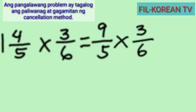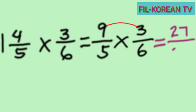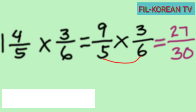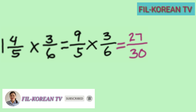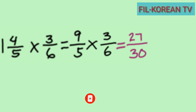The next step is to multiply the numerators and also multiply the denominators. Multiply the numerators: nine times three equals twenty-seven. Multiply the denominators: five times six equals thirty. The answer is twenty-seven over thirty.